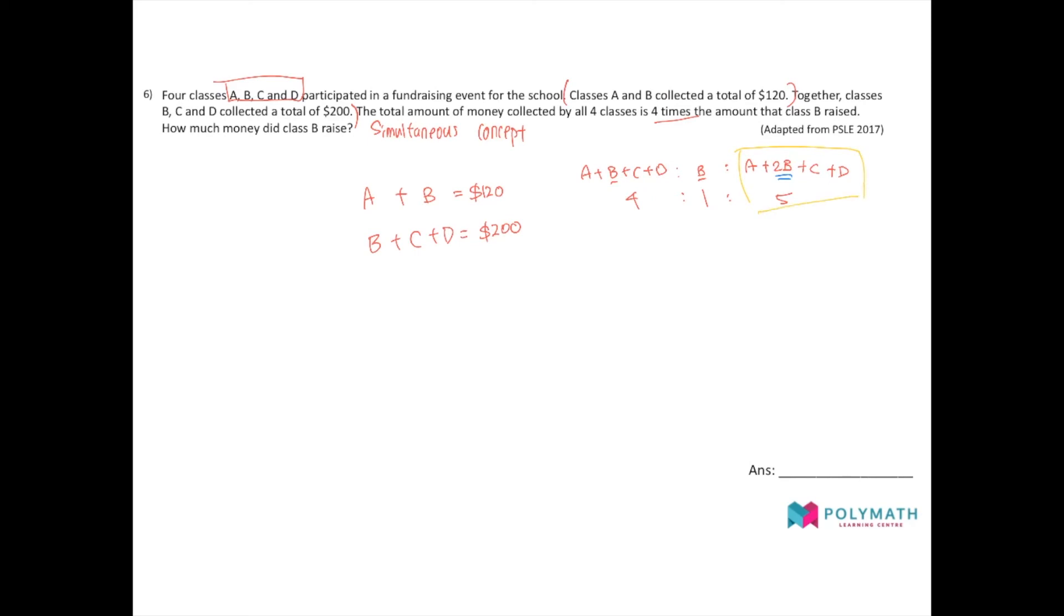Can you see that there's actually one A here, which is here, 2B, B and B, 2B, C, C is here, and D, D is here.